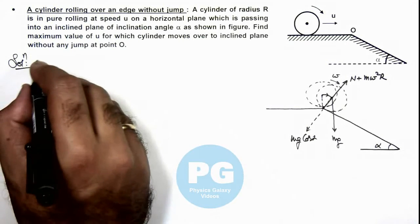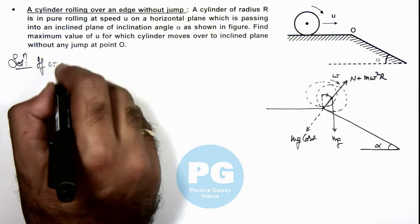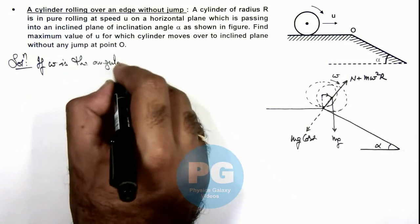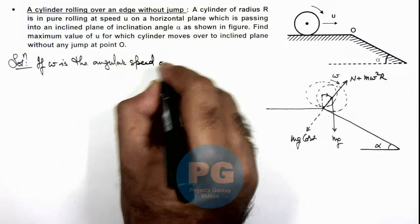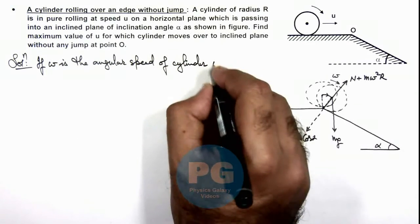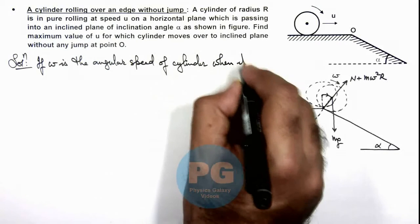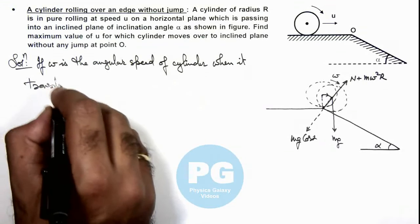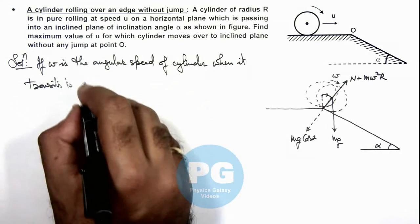If omega is the angular speed of the cylinder when it transits to inclined plane, then by work-energy theorem we use: